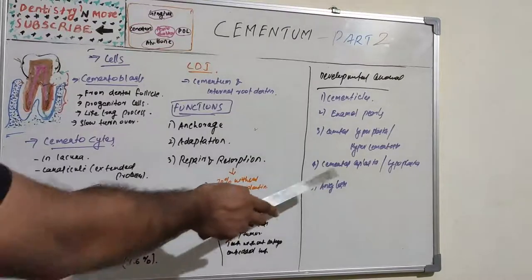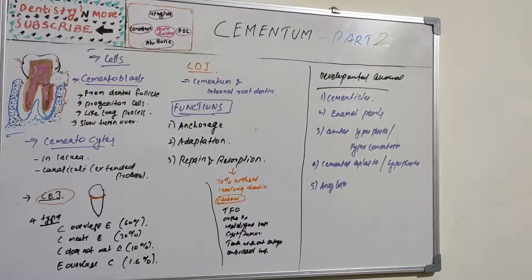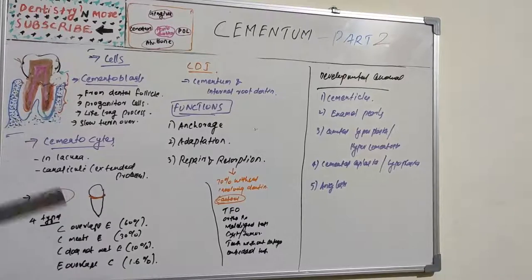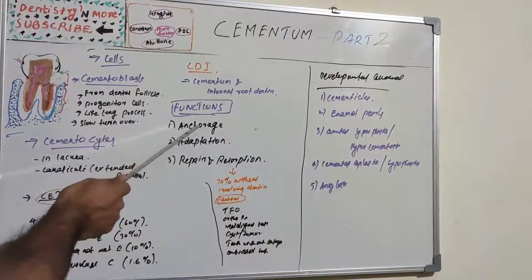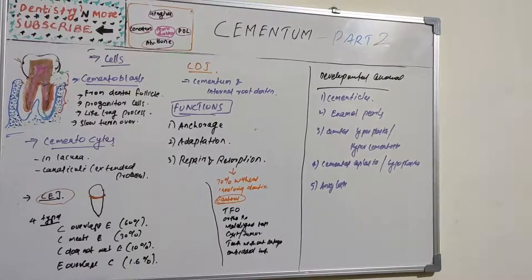Cemental aplasia or hypoplasia refers to absence or paucity of cellular cementum. Hypophosphatasia is due to an inborn error of metabolism — specifically a deficiency of the enzyme alkaline phosphatase — resulting in no proper cellular cementum. This is characterized by loosening and premature exfoliation of deciduous anterior teeth. Since there is no proper cementum, the anchorage function is impaired. Exfoliated teeth microscopically show complete absence of cementum or isolated areas of abnormally formed cementum.